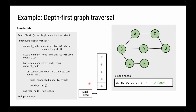We have finished our traversal. Notice the order we visited: from A we went to B, then D, then G, then C - going as far down the chain as possible before cycling back. Then we backtracked and went to E, then F. That is the nature of depth-first traversal: take a node, explore as deeply as you can, then backtrack and explore any other unexplored nodes.